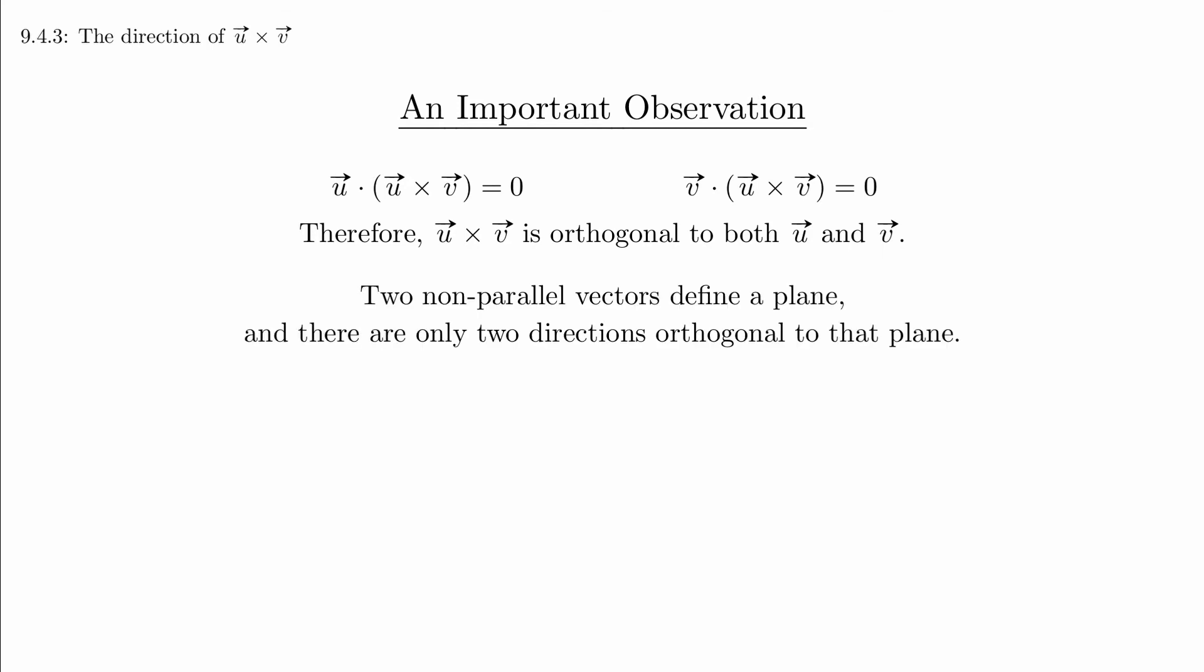Notice that if u and v are not parallel to each other, then together they define a plane. There are only two directions that are perpendicular to the plane, and the correct one is the one that follows the right hand rule.